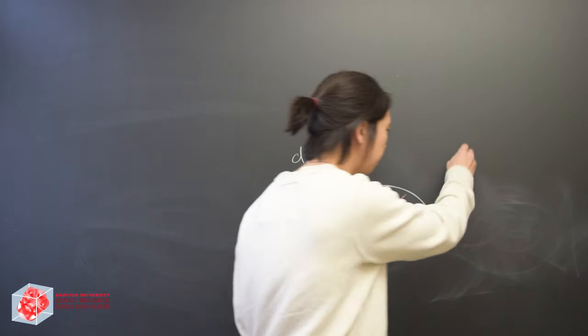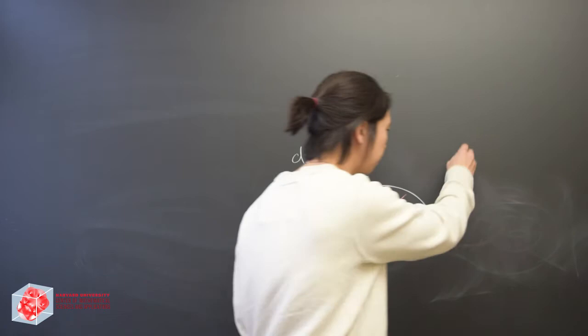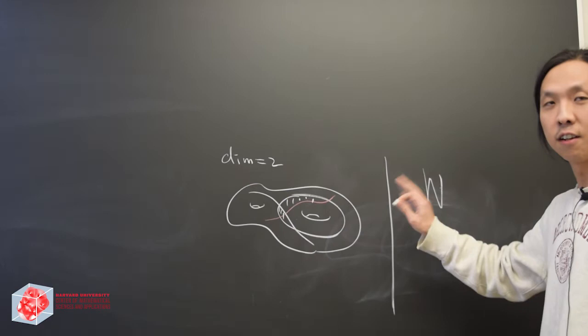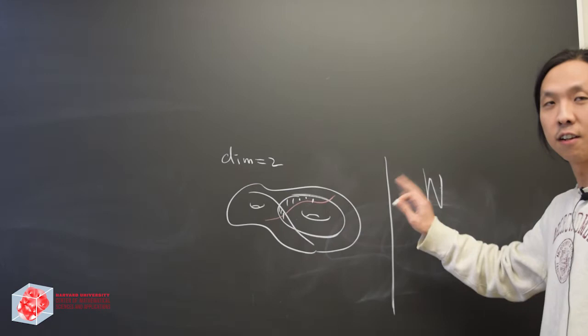From here, you can cook up some mirror, a function W. The interesting thing is you count all these holomorphic disks, which is kind of symplectic information. That corresponds to factorization of this polynomial or some function.